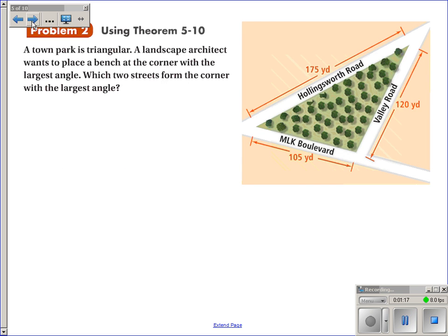So let's use theorem 5-10. This problem says a town park is triangular. A landscape architect wants to place a bench at the corner with the largest angle. Which two streets form the corner with the largest angle? Well, I know from theorem 5-10 that the largest angle is across from the longest side.